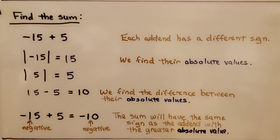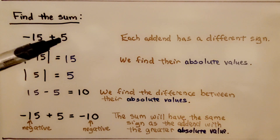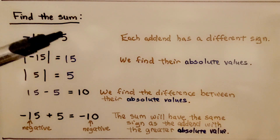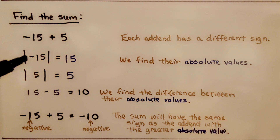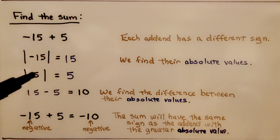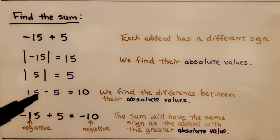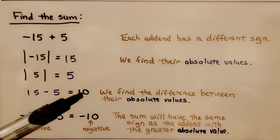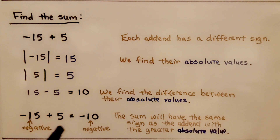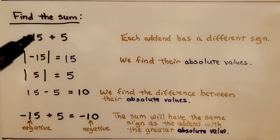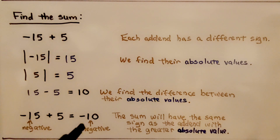Here it's telling us to find the sum. We have a negative 15 plus a positive five — each addend has a different sign. We find their absolute values: the absolute value of negative 15 is 15, and the absolute value of positive five is five. We find the difference between 15 and five, which is ten. We take the sign of the addend with the greater absolute value — that would be negative 15, it's farther from zero, it's negative — so our sum will be negative 10.